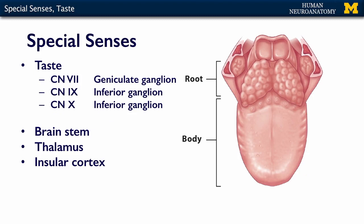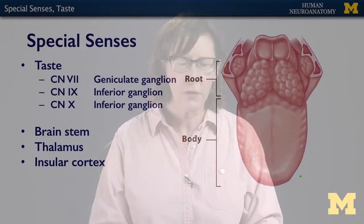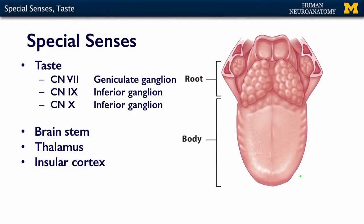Now I want to talk about the pathways related to taste. When we discussed general sensation via spinal nerves, we talked about the dorsal root ganglia as the primary sensory neurons for gross touch, fine touch, pain, and temperature. For the special senses, there are also ganglia involved. For taste specifically, neurons live in three different ganglia associated with the three cranial nerves that carry this modality.